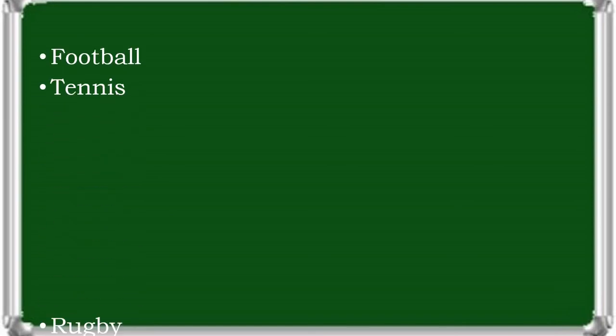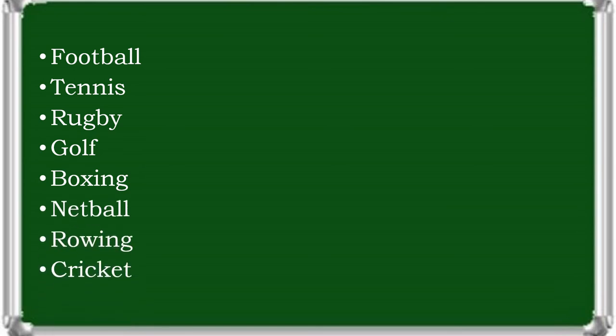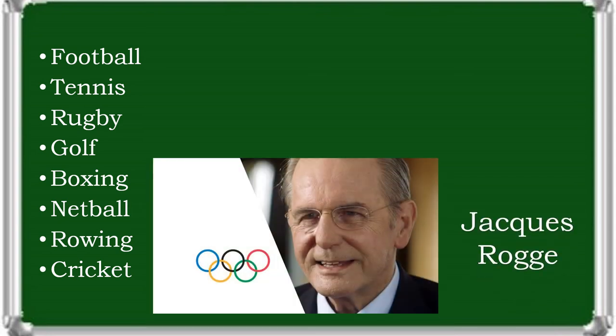Major sports, including association football, tennis, rugby, golf, boxing, netball, rowing, and cricket, originated or were substantially developed in the United Kingdom. In 2012, the President of the International Olympics Committee, Jacques Rogge, stated: 'This great sports-loving country is widely recognized as the birthplace of modern sport. It was here that the concepts of sportsmanship and fair play were first codified into clear rules and regulations. It was here that sport was included as an educational tool in the school curriculum.'